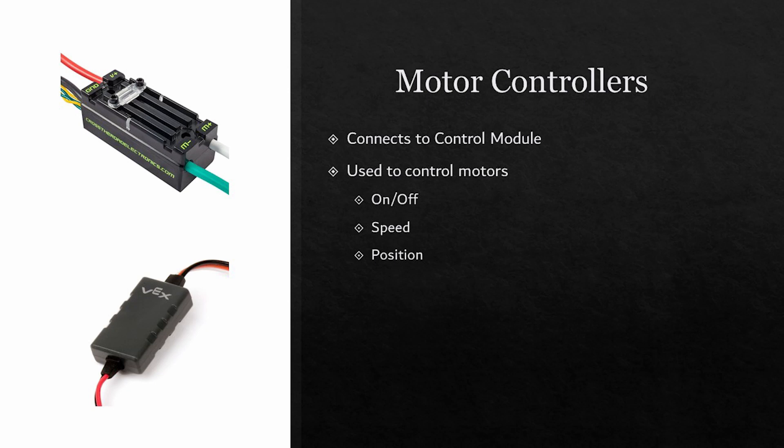For a servo motor, it determines the position it is going to. The top motor controller is a Talon SRX used in FRC, while the bottom motor controller is a VEX motor controller.